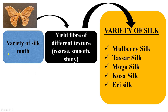There are varieties of silk moths that yield fibers of different textures — coarse, smooth, shiny, etc. — giving us different varieties of silk fabric such as mulberry silk, tasar silk, muga silk, kosa silk, and eri silk. Mulberry silk is quite popular.